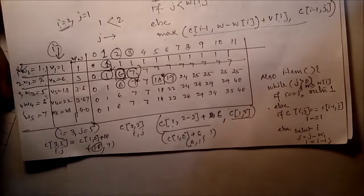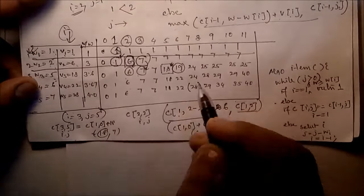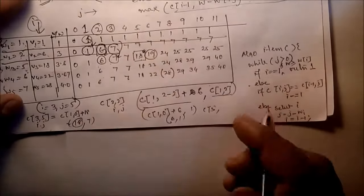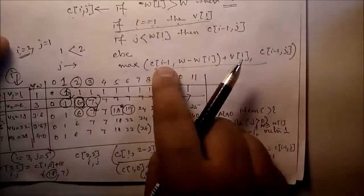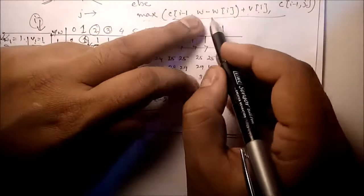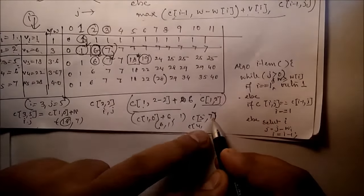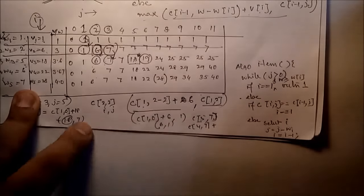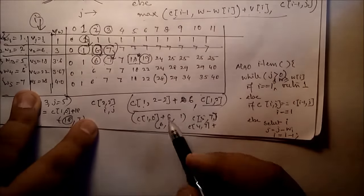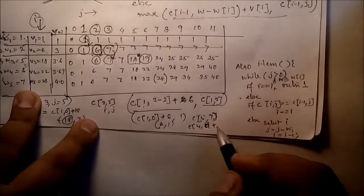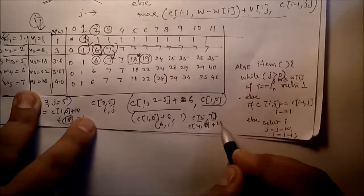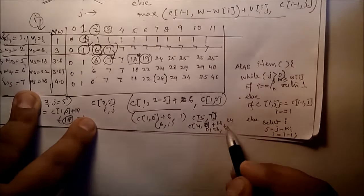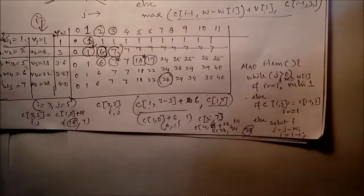For c[5][7]: compute c[4][7 - 7] + v5 = c[4][0] + 28 = 0 + 28 = 28. The previous entry c[4][7] is 24. Compare: max(28, 24) = 28. That's why the entry is 28.